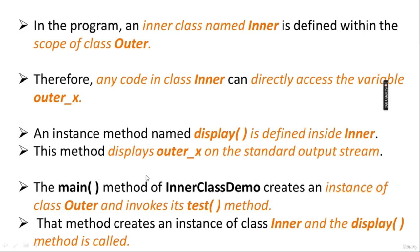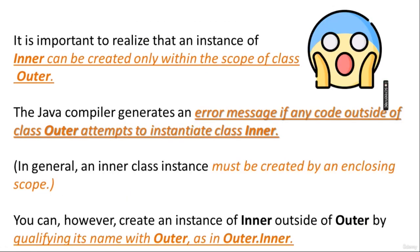It is very important that an instance of the inner class can be created only within the scope of class Outer. The inner class does not exist without the existence of Outer. The Java compiler generates an error message if any code outside of class Outer attempts to instantiate class Inner. In general, an inner class instance must be created within the enclosing scope.